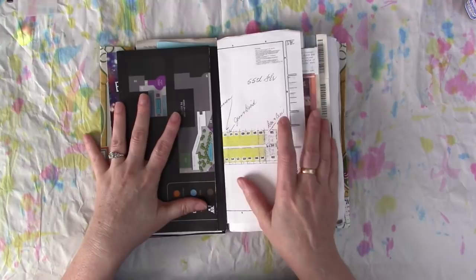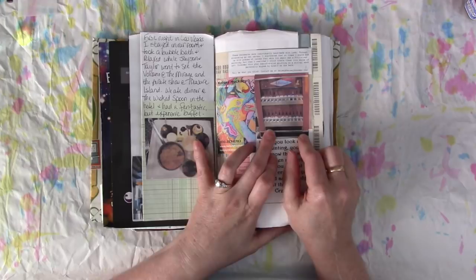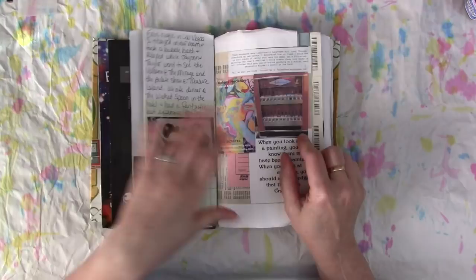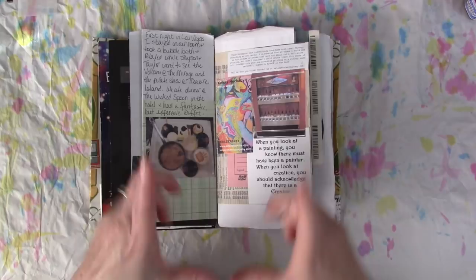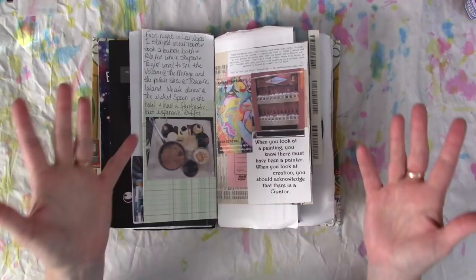As I was researching things about the hotel, I ran across something called these Artomat machines. And the hotel had, at that time, a couple, two or three of these machines, which are refurbished cigarette machines. And how they work is you put in five bucks, you yank the knob, and out comes a piece of art.